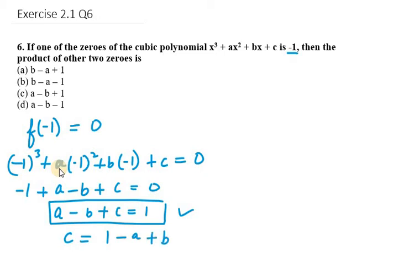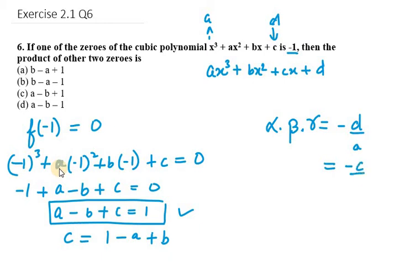Now we know that the product of zeros in case of cubic polynomial is αβγ and it equals -d/a. So in this case my d is c and my a is 1 because we have a general equation as ax³ + bx² + cx + d. So d is equivalent to the last term that is c and a is equivalent to coefficient of x³ that is 1. So it will be -c/1.